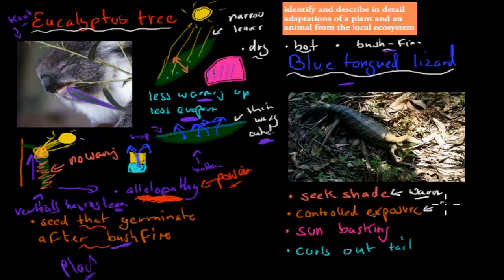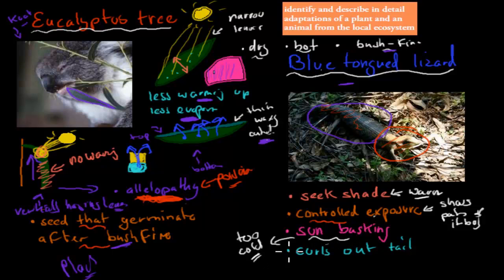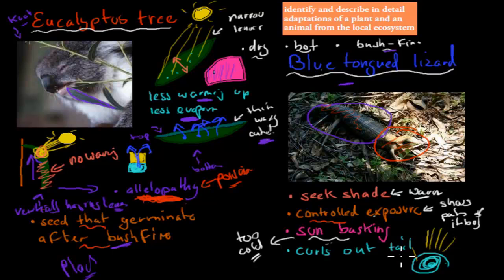The blue-tongued lizard can also do something called controlled exposure, which means it shows only parts of its body to the sun. In the picture, most of its body is in the shade and only its head is poking out. So even when it's warm, it can still get some sunlight while keeping most of its body shaded. It also does sun basking when it's too cold — for example, in late afternoon before a cold night, it basks to absorb as much heat as possible. Additionally, it can curl its tail up, which reduces the surface area exposed to sunlight, resulting in less warming up.